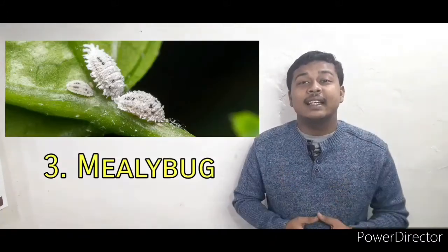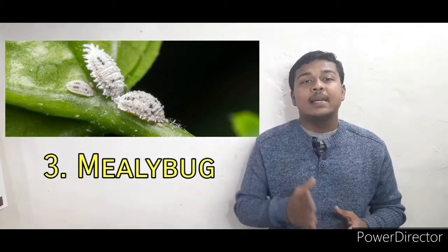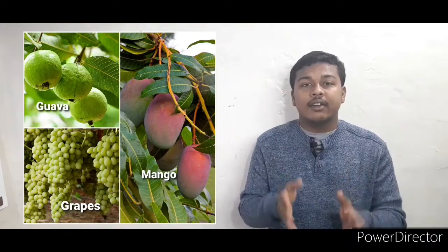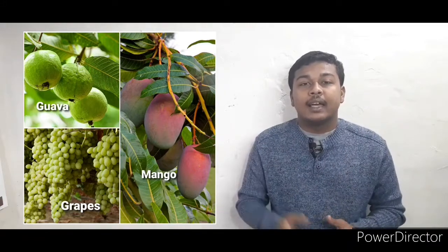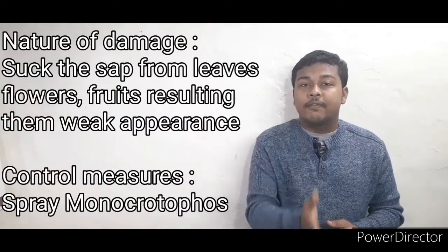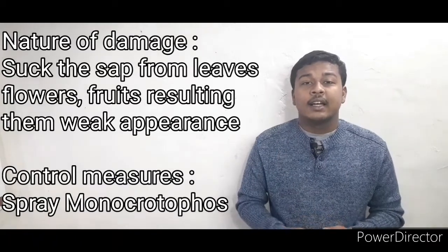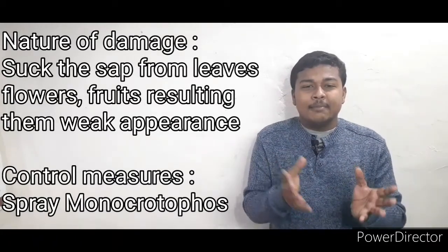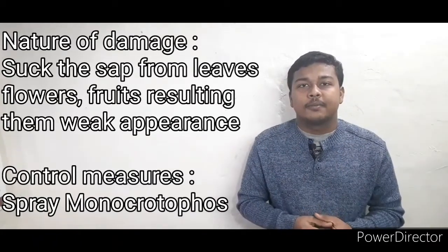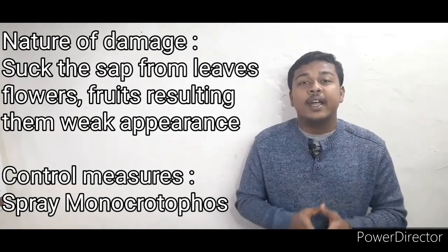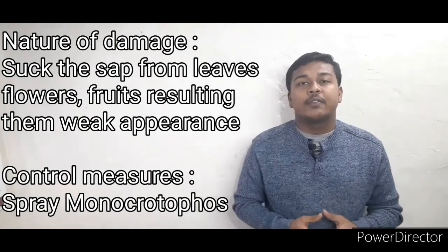The third pest is the mealy bug. The affected crops are mango, guava, and grapes. They suck the sap from the leaves, fruits, and flowers, which results in a weakened appearance. To control this, spray monocrotophos.